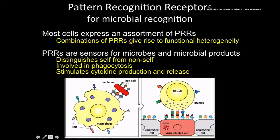Most cells express an assortment of pattern recognition receptors — there's a huge spectrum of them. If you're doing a concept map, pattern recognition receptor goes at the very top. A really important concept here is distinguishing self from non-self: how can we identify a pathogen and make sure we're only killing the pathogen and not our own cells?